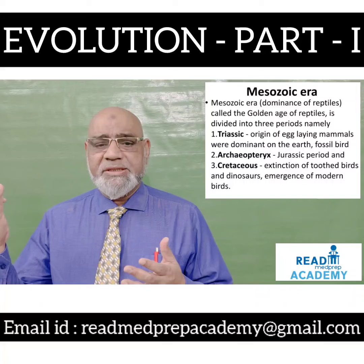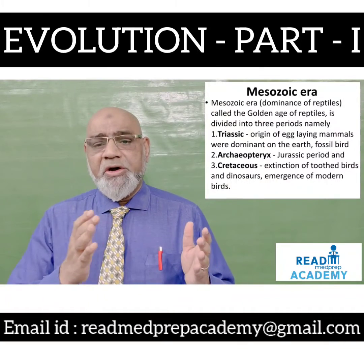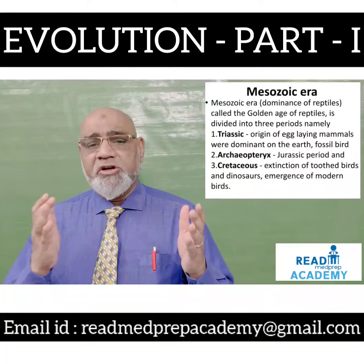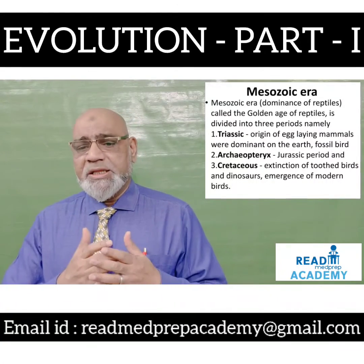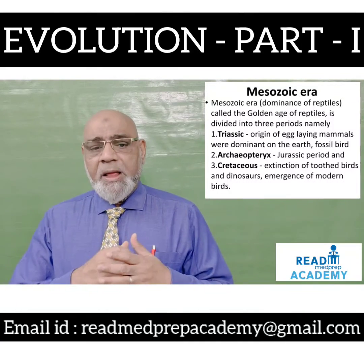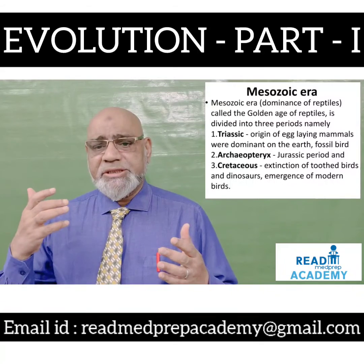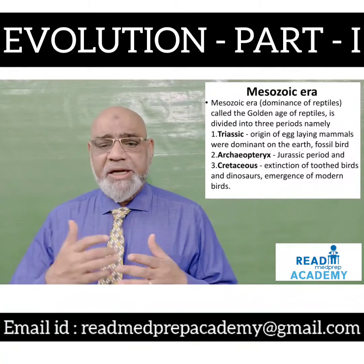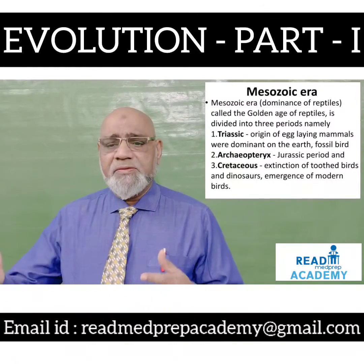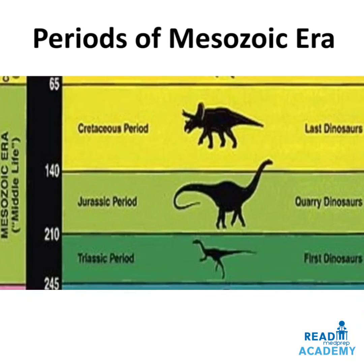The Mesozoic era, known as the golden age of reptiles, saw dominance of reptiles and is divided into three periods. Triassic: origin of egg-laying mammals, fossil bird Archaeopteryx appeared. Jurassic: dinosaurs dominant. Cretaceous: extinction of toothed birds and dinosaurs, and emergence of modern birds. Here you can see the Triassic period with the first dinosaurs, Jurassic with the quarry dinosaurs, and the Cretaceous period with the last dinosaurs.